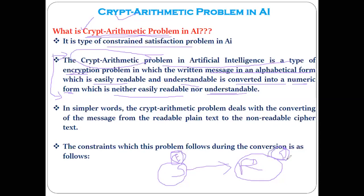Why is encryption and decryption required? For the purpose of security. When the message is being transferred from sender to receiver, if that message is found by somebody else and it is not encrypted, then somebody else can read that confidential message. So encryption is nothing but encoding the message in such a way that it can be understood by the receiver only.